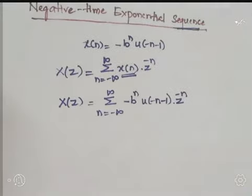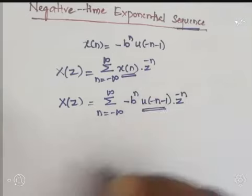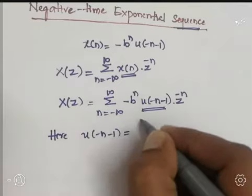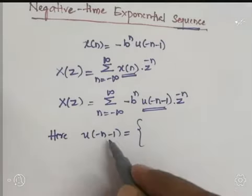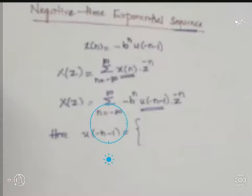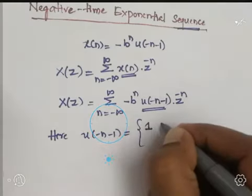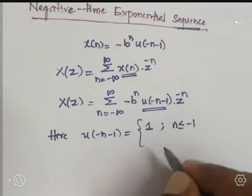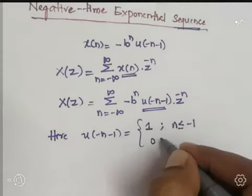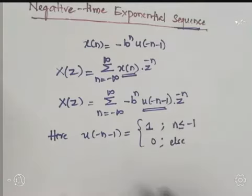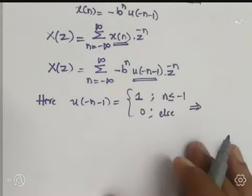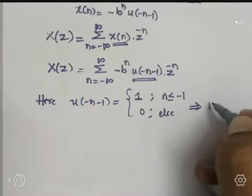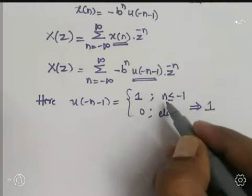What is the value of u(-n-1)? It is a step signal with a shift and reflection applied. We get amplitude 1 for n ≤ -1, and 0 otherwise. So we are having amplitude 1 for u(-n-1) when the value of n is less than or equal to -1.